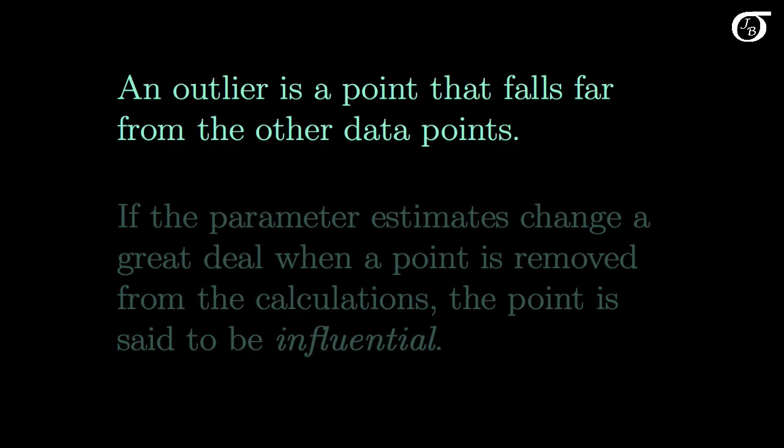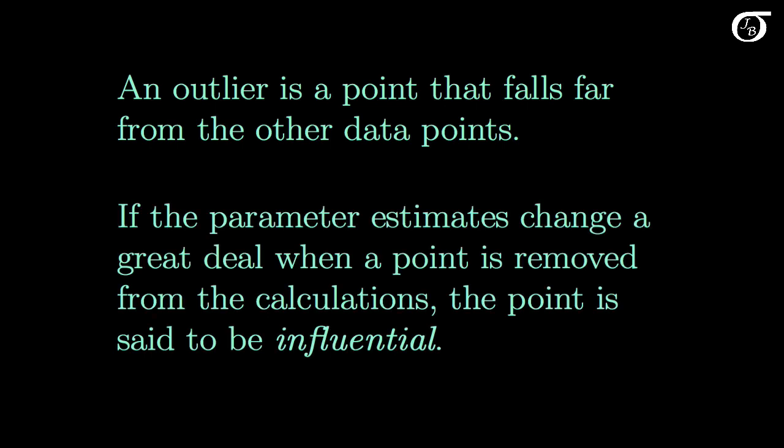An outlier is a point that falls far from the other data points. It's a point that's extreme in some way. If the parameter estimates change a great deal when a point is removed from the calculations, the point is said to be influential.